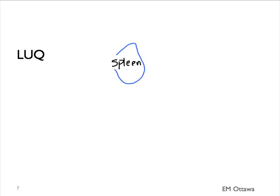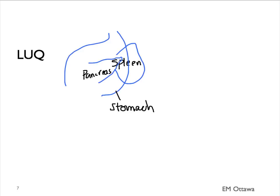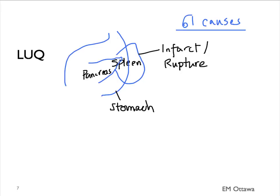Let's move on to the left upper quadrant. What lives there? The spleen, tip of the pancreas, and part of the stomach. GI causes of pain in this area include splenic disorders such as infarct or rupture, pancreatitis, or gastritis. For non-GI causes, similarly to the right upper quadrant, the lung and the diaphragm sit right above this area. Therefore, conditions such as pneumonia and pleural effusion will give pain to the left upper quadrant.